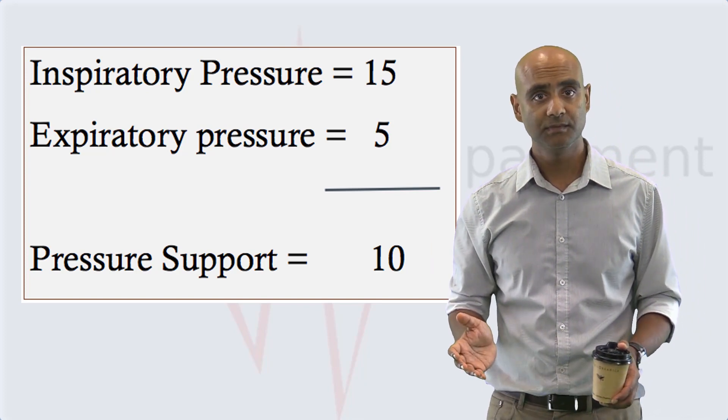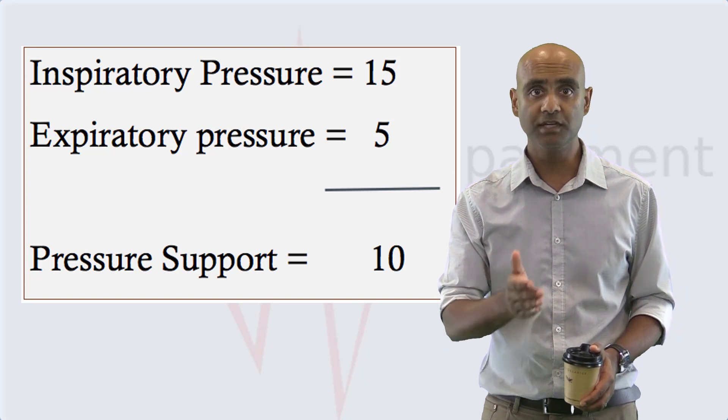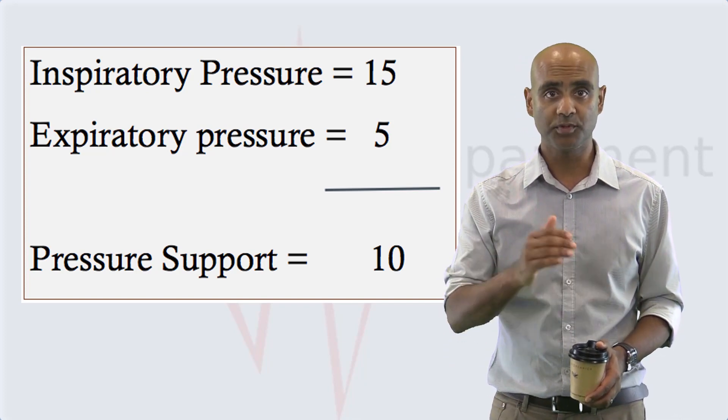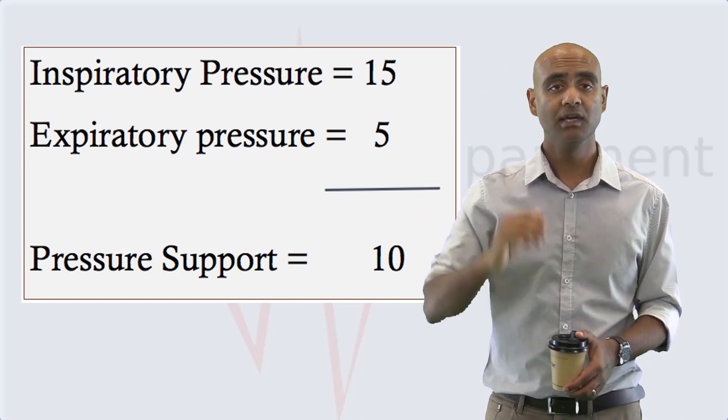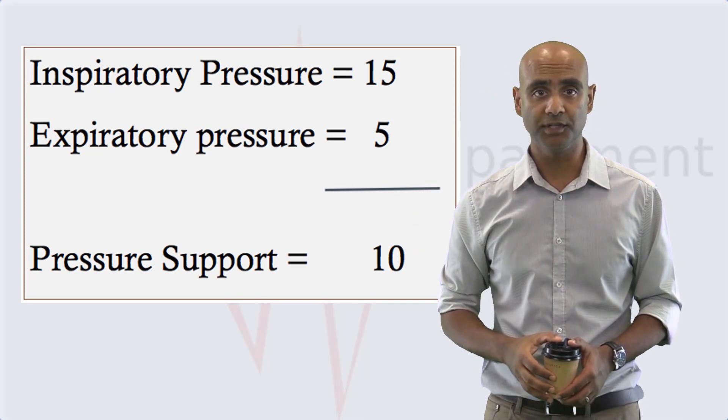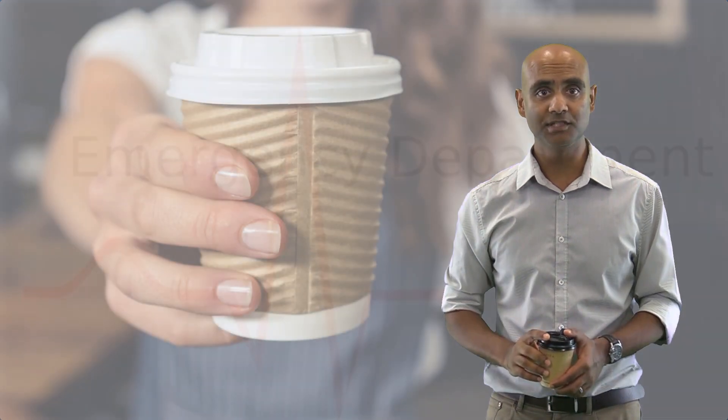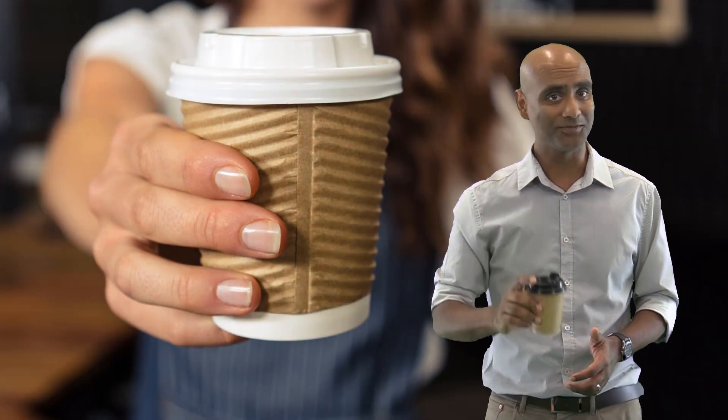Well that's it in a nutshell. Remember, CPAP to treat hypoxia, BiPAP to treat hypercapnia, with pressure support being the difference between the two to help decrease the work of breathing. Well that's all from me, I'll catch you next time on Emergency Medicine Topics in one coffee. Cheers.